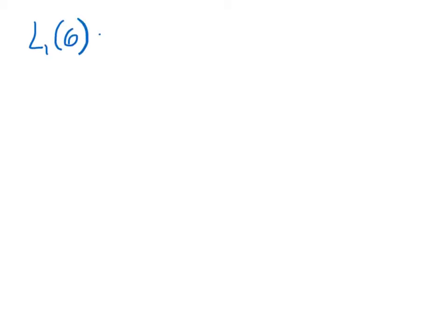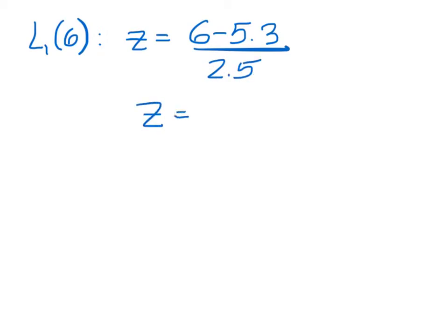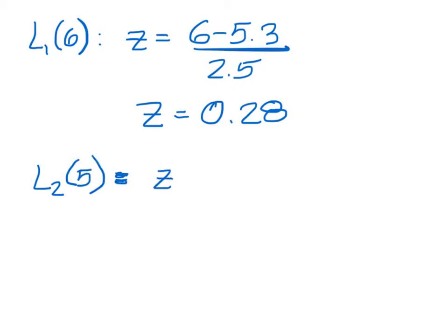Now for the z-score for List 1, item 6. The z-score is going to be the item minus the mean, divided by the standard deviation. That gives us 0.28.